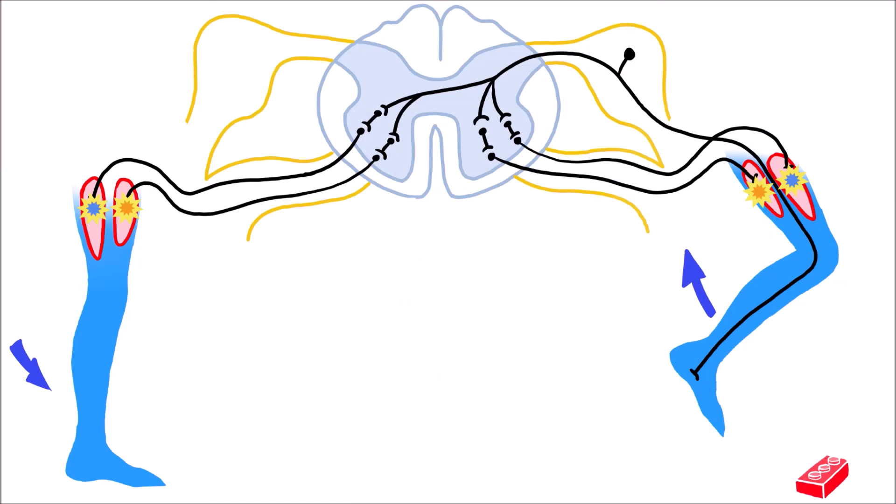The inhibition of the ipsilateral extensor muscles is called reciprocal inhibition, and the excitation of contralateral extensor muscles is called cross extensor reflex.